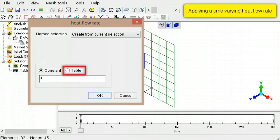If the heat flow rate varies over the duration of a transient thermal analysis, select the table option.